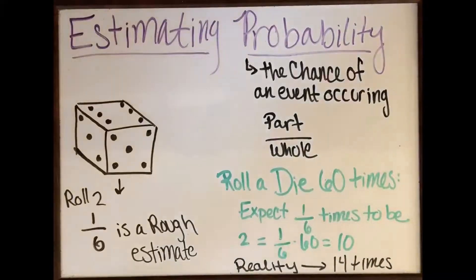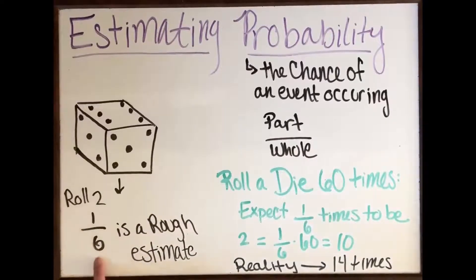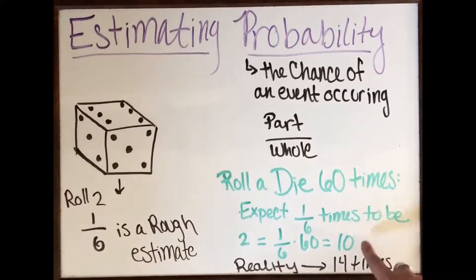Okay, so now what do we do with those numbers? One sixth is a rough estimate of the number of times that a dice will be rolled in a total number of times. So let's just take an example. If we want to roll a dice 60 times, we would expect that one sixth of the times would be twos. So that means out of 60 times, we're gonna be rolling ten twos.